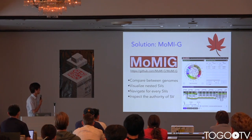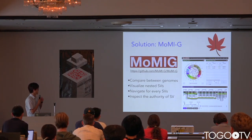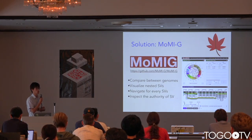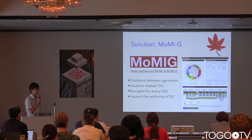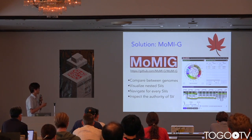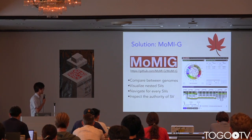Momiji has four features. First, Momiji can compare between different genomes and individual genomes. The second feature is that Momiji can visualize nested or large-scale SVs. Third, Momiji has multiple view modules to navigate each SV. As a consequence, Momiji enables us to inspect the authenticity of each SV.